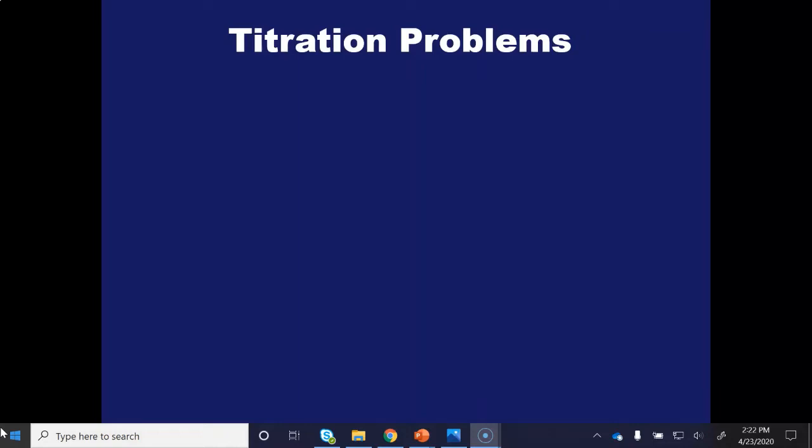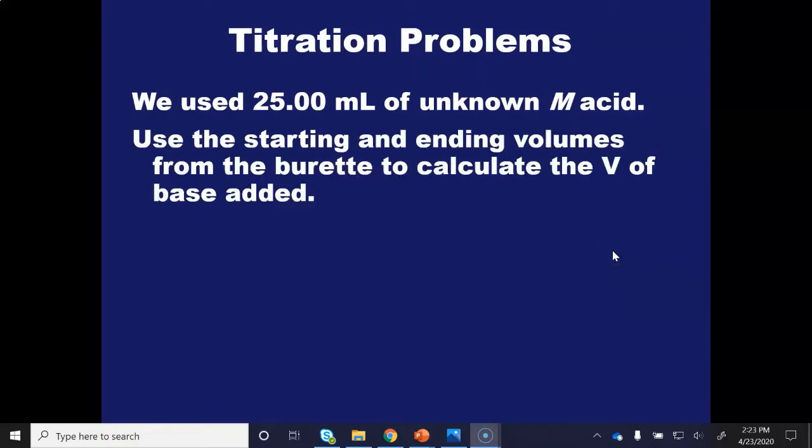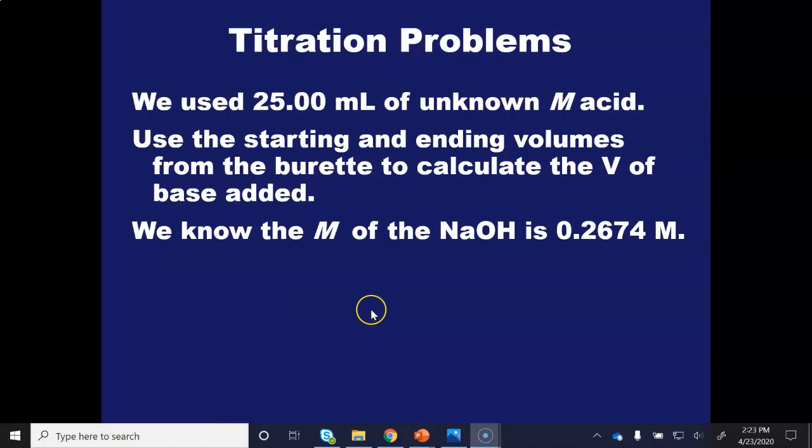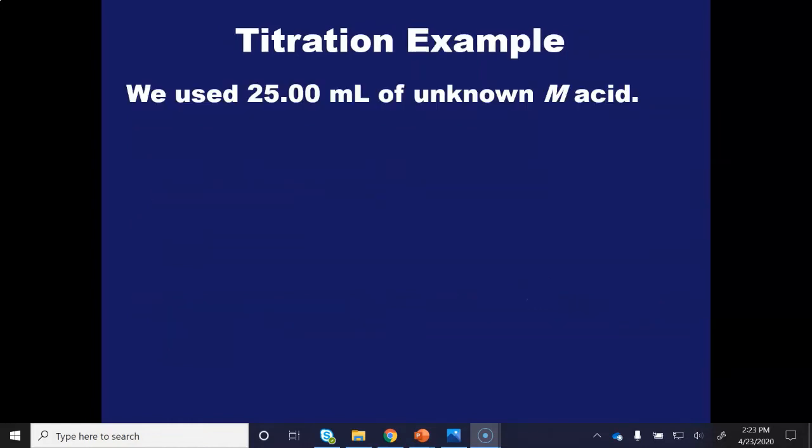So let's look at an example of the math for the titration problems so that you can use the data in the video to fill out your report. In all of our trials, we used 25.00 milliliter sample of our unknown molarity acid where we used our volumetric pipette to get a very accurate 25.00 milliliters. And we're going to use these starting and ending volumes from the burette because that will allow us to calculate the volume of base that was added. We know from our standardization that the molarity of the base is 0.2674 molar. How can we use this information to get the molarity of the acid? As an example for that, I'm going to use a third trial that I did not make a video of.